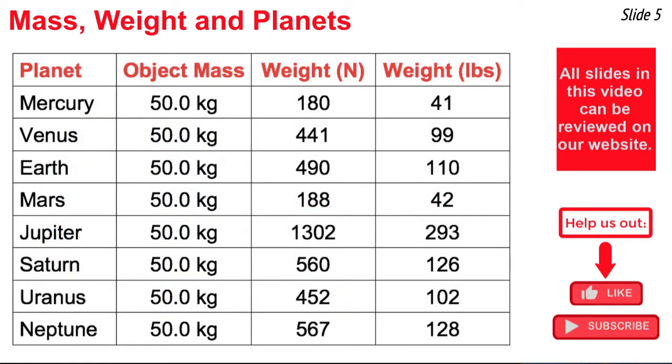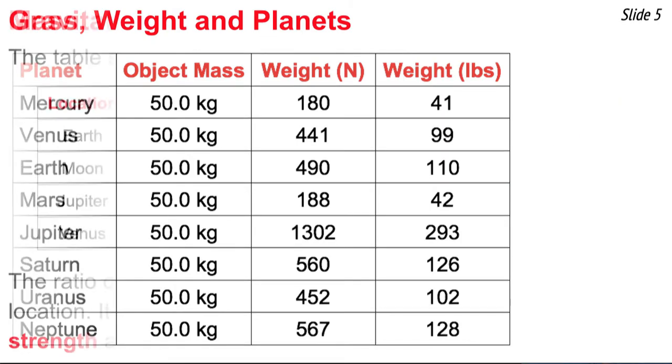If we summarize this person, what we notice is that this 50 kilogram person has a mass of 50 kilograms everywhere in the universe, but the weight varies considerably from 180 Newtons on Mercury upwards towards 1302 Newtons on Jupiter. Weight depends upon the location.